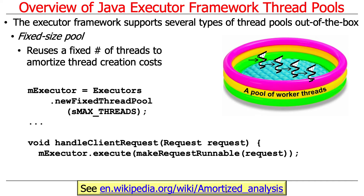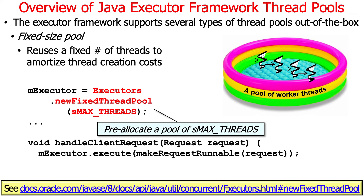One of the easiest variants to understand is the fixed-size thread pool, which, as the name implies, creates a fixed number of threads. Those threads get reused in order to amortize thread creation costs. We have a pool of threads with, say, four threads for sake of argument. It's very common to have the number of threads in the pool equal to the number of cores on the processor, though you can restrict it or make it bigger — that's a good starting point.